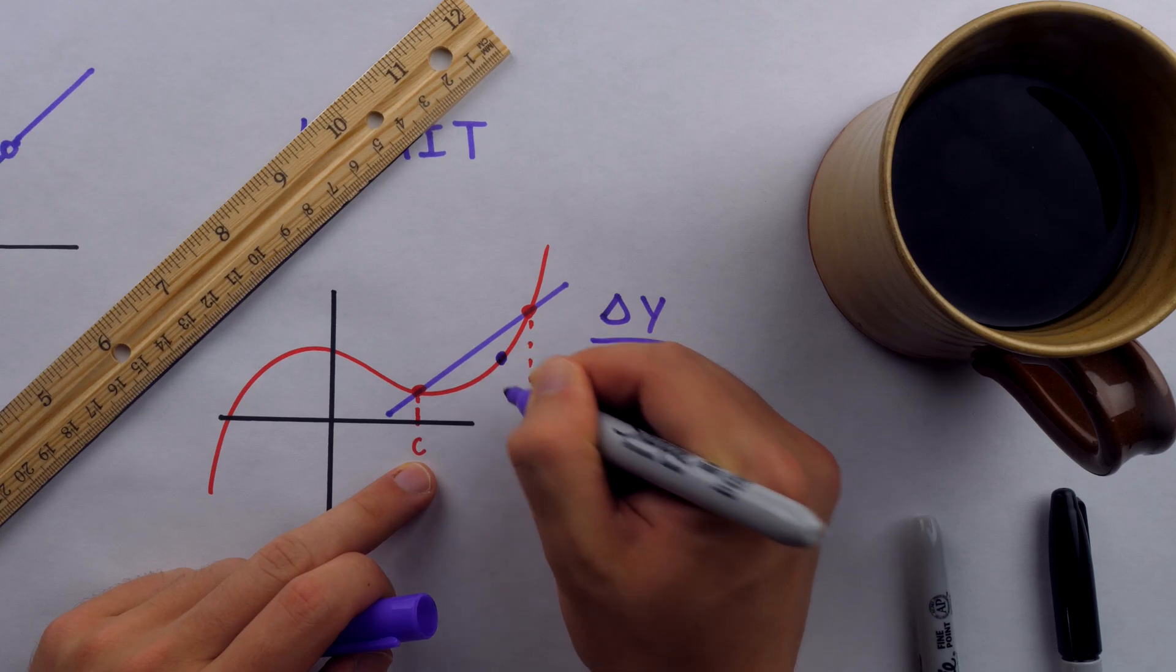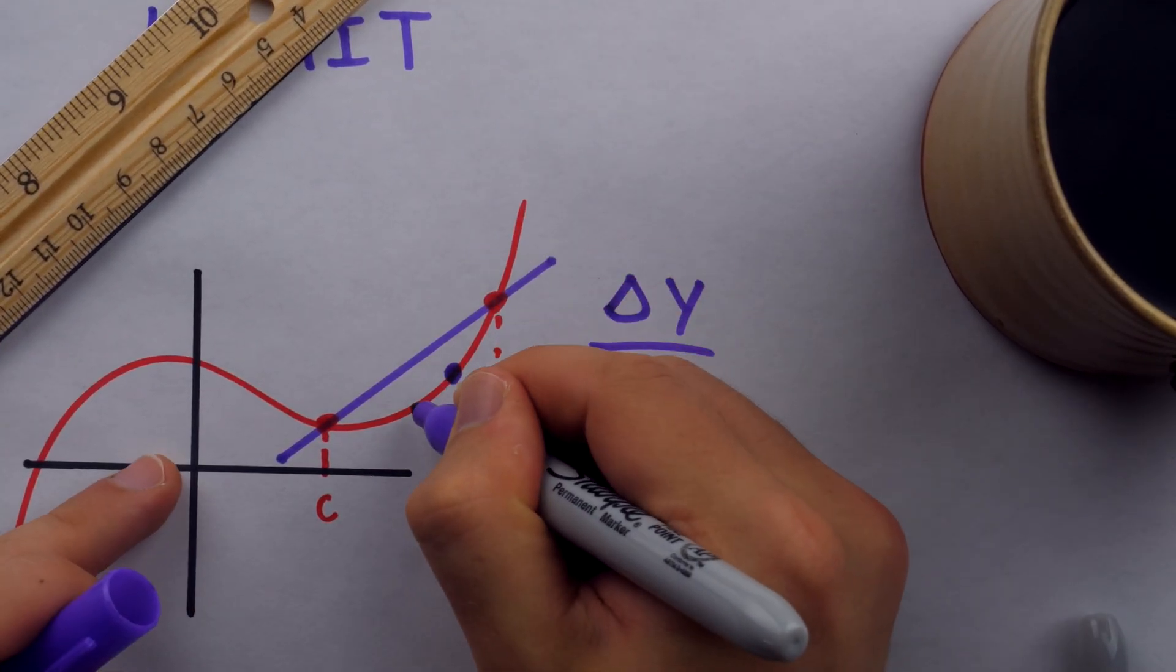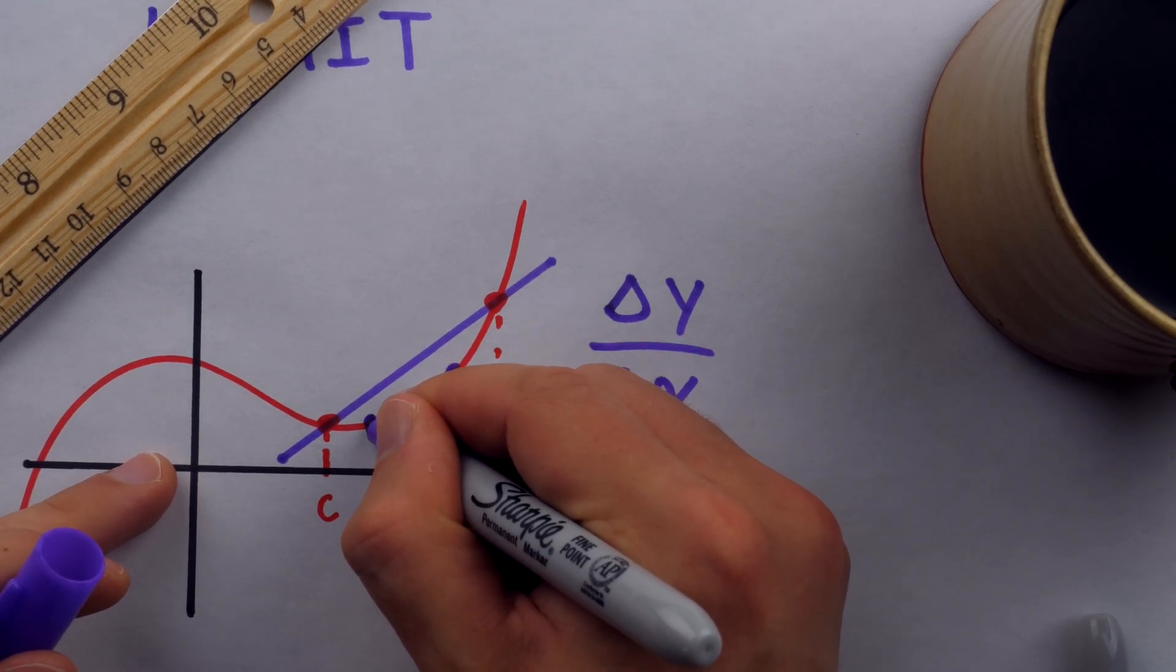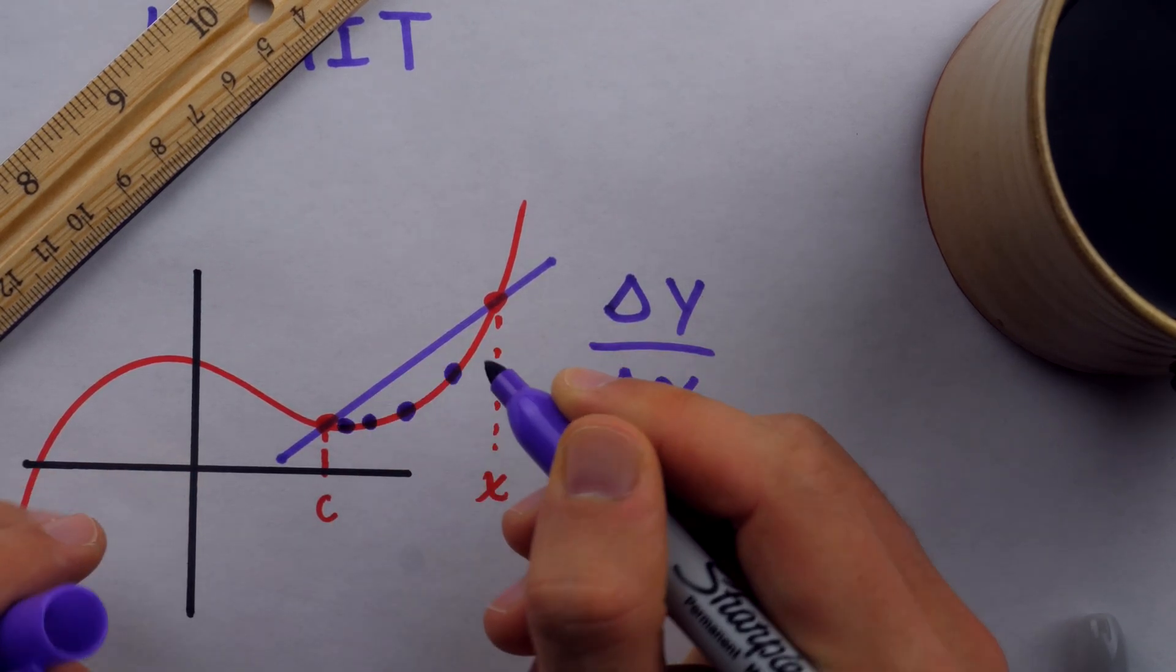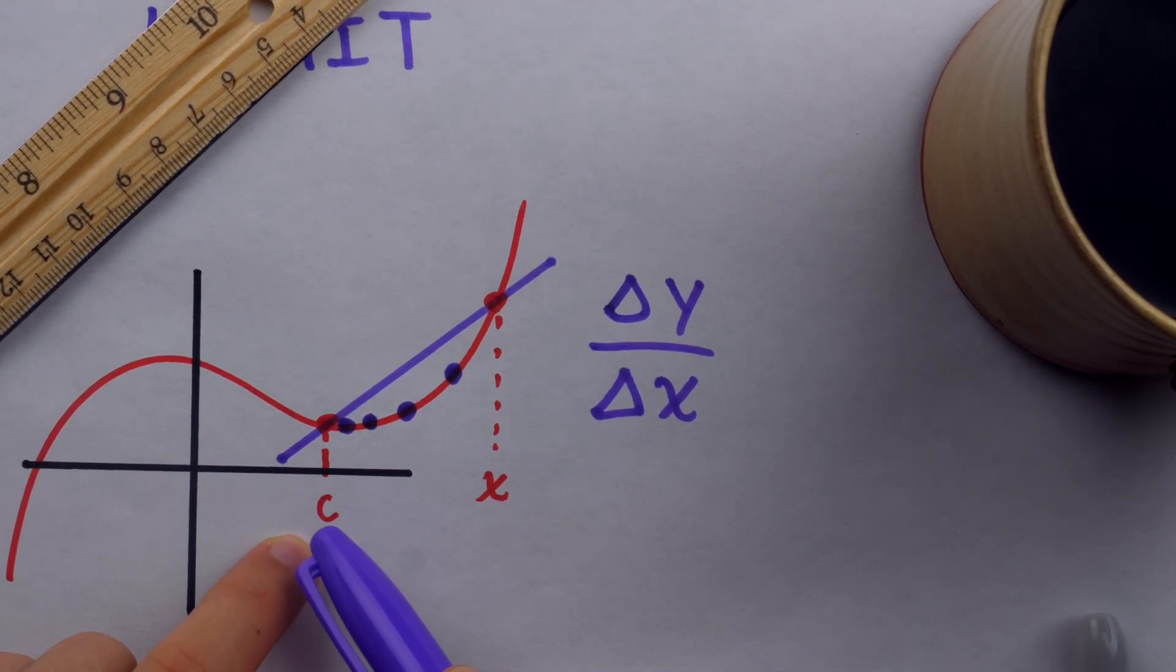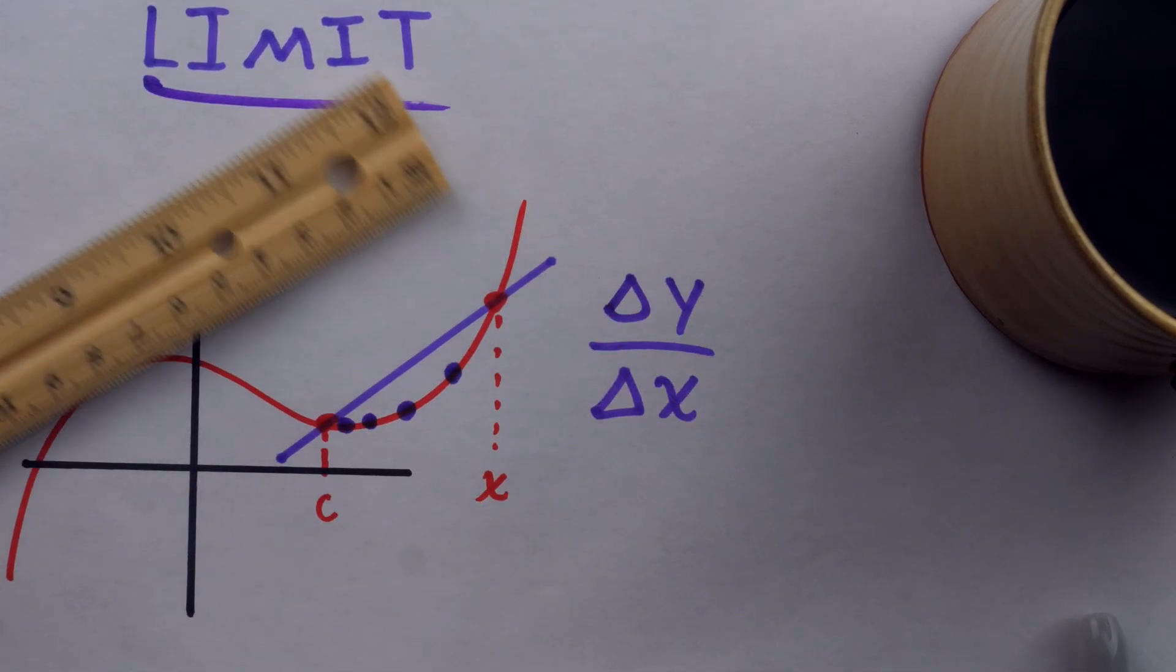So I could put x anywhere I like. I could do the calculation except at c. I could move x quite close to c. I could bring x over here. That's a little bit closer to c. Let me zoom in so you can see this. I could bring x over here. That's even closer to c. I could bring x here. I could bring x as close to c as I want. I might even say I could bring x infinitely close to c. I just can't place it directly at c.